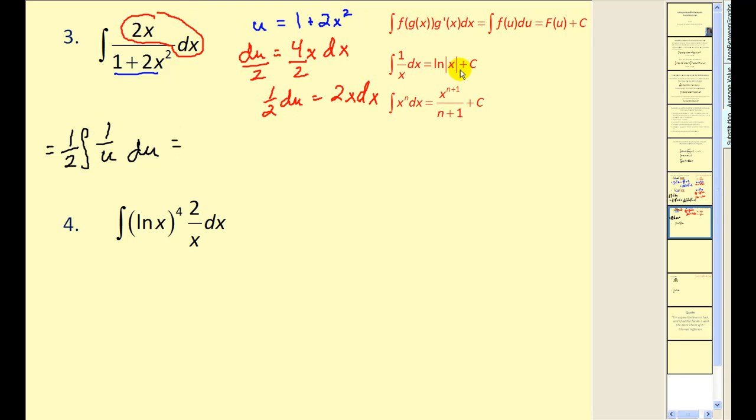Remember that the antiderivative of 1/u is equal to natural log u. Now instead of writing u, I'm going to replace it with 1 + 2x^2, plus c. Let's try another.